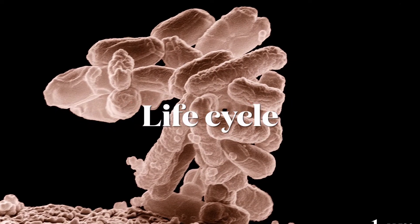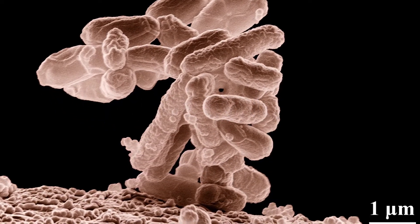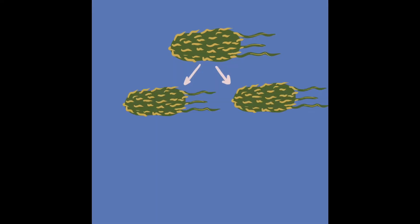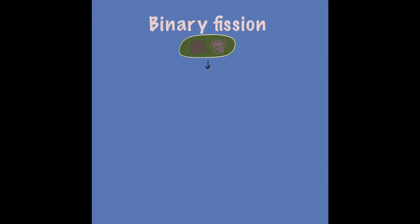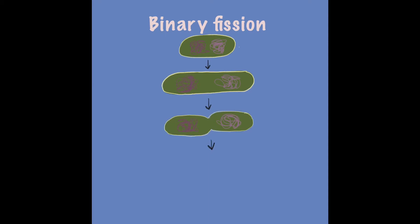E. coli life cycle: the E. coli life cycle is an asexual process. E. coli replicates itself into two daughter cells. This process lasts 20 minutes and it is called binary fission. The first step is the replication of the DNA molecule. For the second step, the cytoplasmic membrane elongates and separates the DNA molecules. For the third step, the cross wall forms with the invagination of the membrane. For the fourth step, the cross wall forms completely and there are two bacteria. The end result is two identical daughter cells of E. coli.